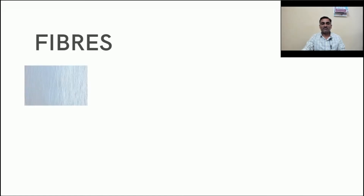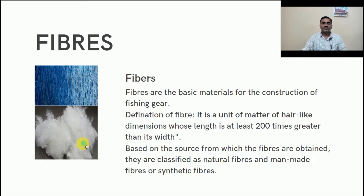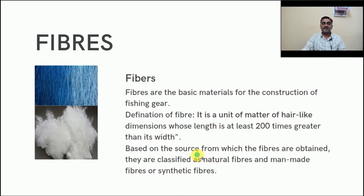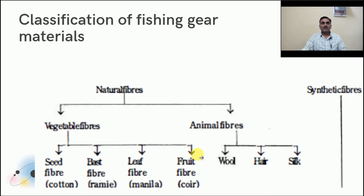To make a net we require fiber. What is fiber? Here you can see cotton fiber and synthetic fiber. Fibers are the basic material for the construction of fishing gear. We can define fiber as a unit of matter of hair-like dimension whose length is at least 200 times greater than its width. Based on the source from which fibers are obtained, they are classified as natural fiber, man-made fiber, or synthetic fiber. In this video, we will discuss the classification and types of natural fibers; synthetic fibers will be discussed in coming videos.